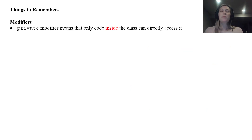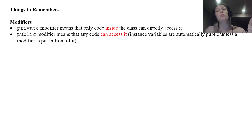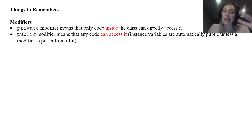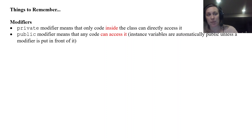Here are some things to remember when calling void methods. The private modifier means only code inside the class can directly access it. Public means any code can access it. With instance variables you must explicitly put the keyword private — if you don't, they're automatically public. With methods, you want to explicitly state they are public, even though they default to public if you leave it off.